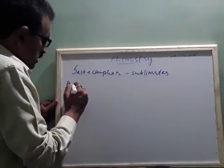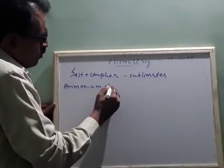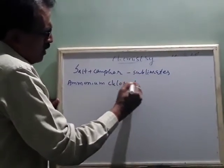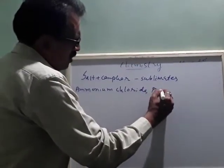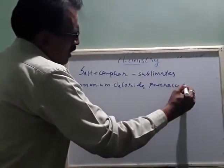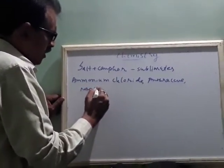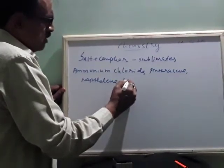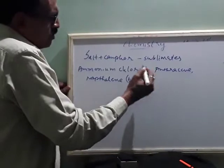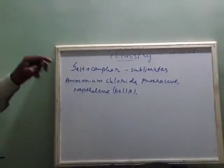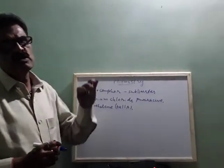Examples of sublimates include ammonium chloride, anthracene, and naphthalene — naphthalene balls you may know very well. These are compounds which directly convert from solid to gaseous state without changing into liquid.